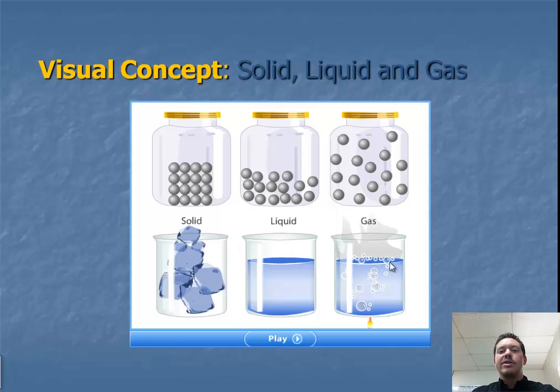here's a liquid in the middle, here's a gas at the bottom. If we look at those at a molecular level, typically, we're going to see solids having a definite shape and definite volume.